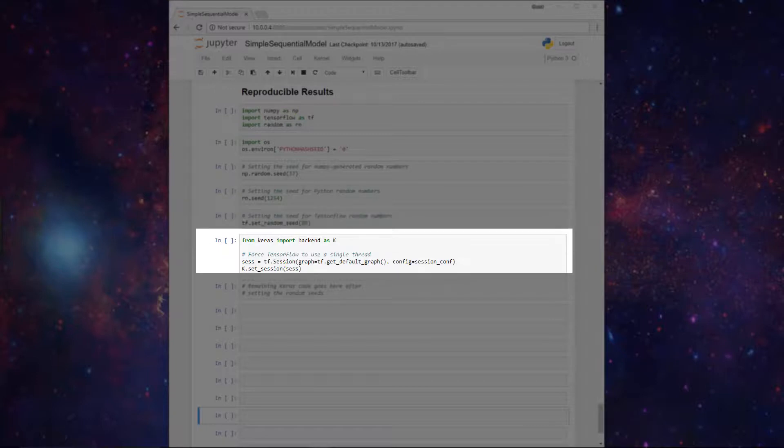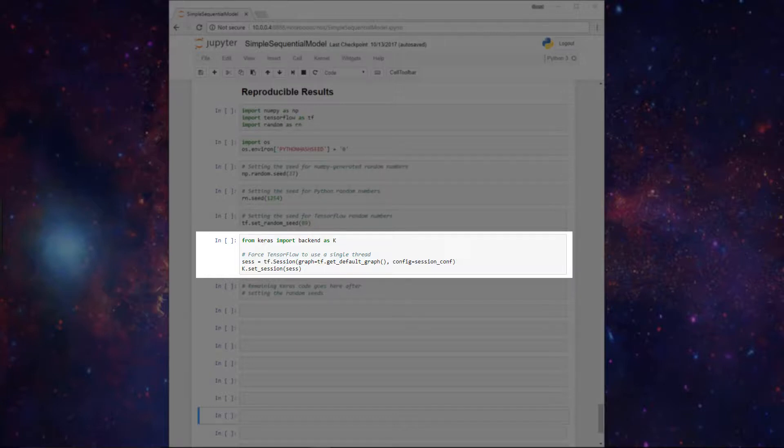Now as an additional item, the Keras documentation also tells us that we should force TensorFlow to use a single thread since multiple threads are a potential source of non-reproducible results. And we can do that here with this code, which is directly provided from the documentation.